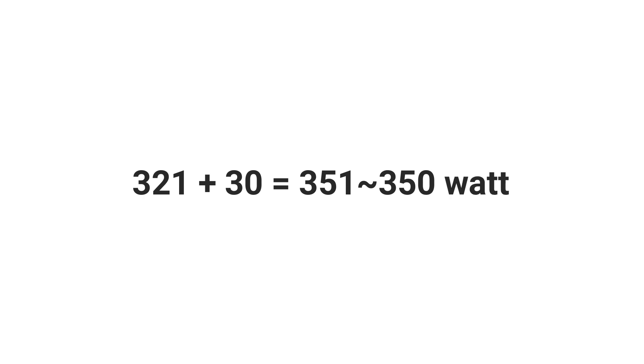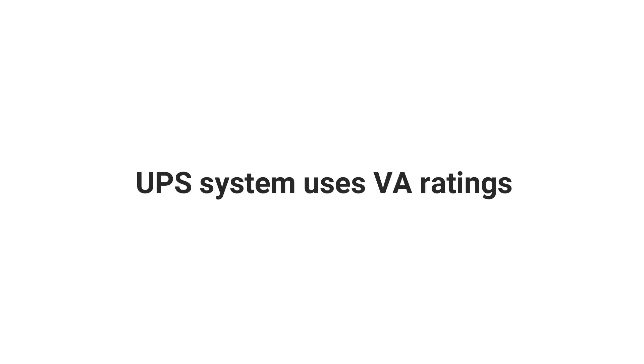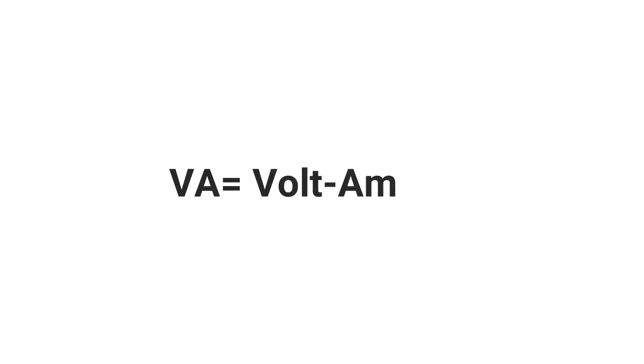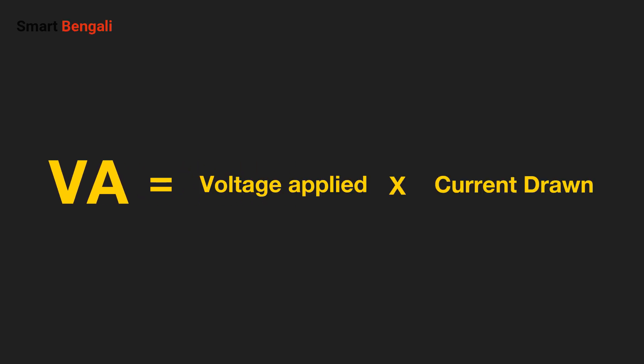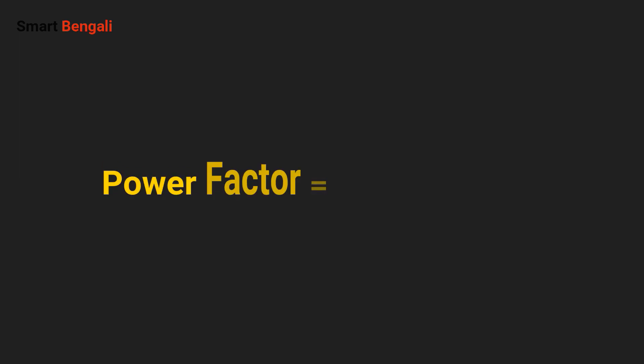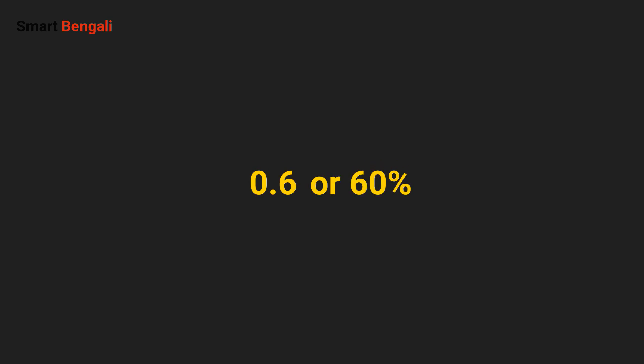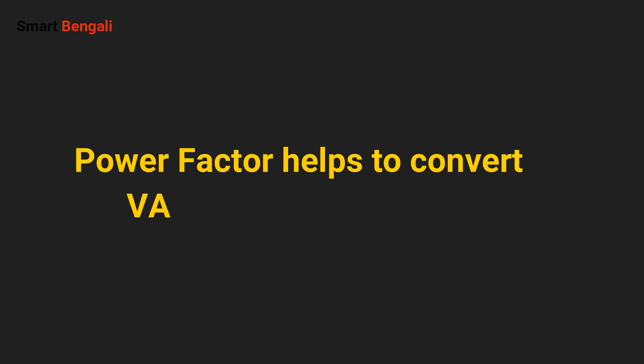I need a UPS that can power a 350-watt system, but UPS devices are rated with VA ratings. What is this VA rating and how do you convert VA to watts? VA stands for volt-ampere — volt-amps are called apparent power and it is the product of the voltage applied to the equipment times the current drawn. On the other hand, power in watts is the real power drawn by the equipment. The ratio of watts to VA is called the power factor, expressed as a number — for example 0.6 — or as a percentage, 60%.